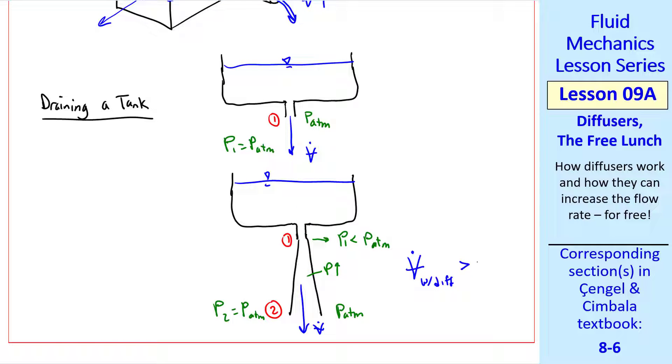So the diffuser supplies a kind of suction to draw more water out. So V dot with the diffuser is greater than V dot without the diffuser. You get an increased volume flow rate, quote, for free, unquote, other than the cost of the diffuser itself.